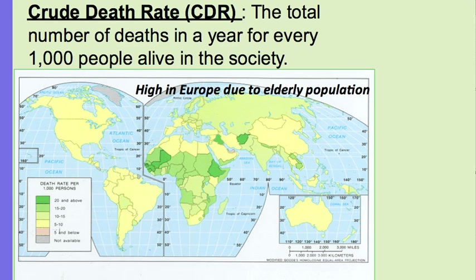The crude death rate is the total number of deaths in a year for every 1,000 people. The highest rates are seen in Africa, largely due to AIDS and malaria, and interestingly a bit higher in places like Russia and Northern Europe — Germany, Poland, and so forth. But it's fairly low throughout the entire world, not too high in any place.